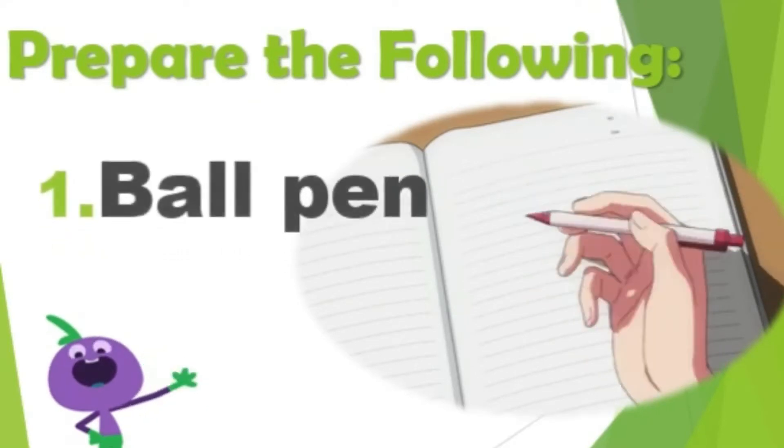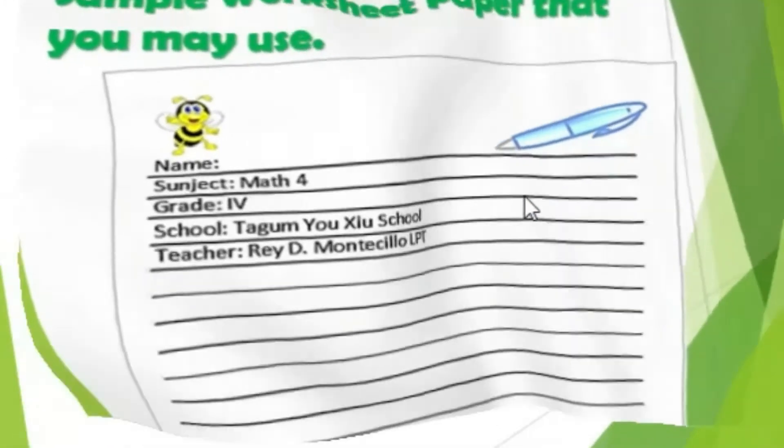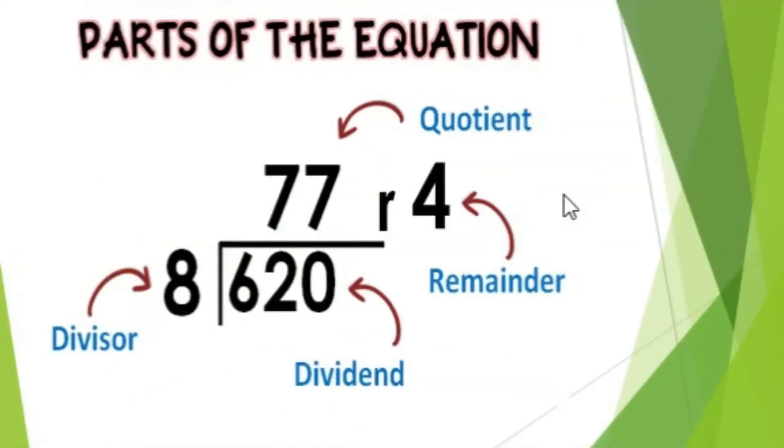the following: pen and paper. This is a sample worksheet that you're going to use. Now let us first know the parts of the equation. This is what we call the dividend, divisor, the quotient, and the remainder.